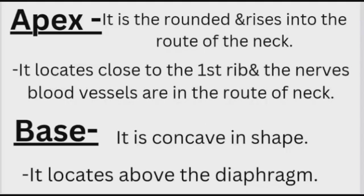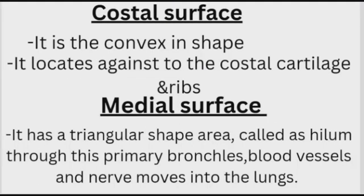The costal surface is convex in shape and lies against the costal cartilage and ribs. The medial surface has a triangular-shaped area called the hilum, through which the primary bronchi, blood vessels, and nerves move into the lungs.